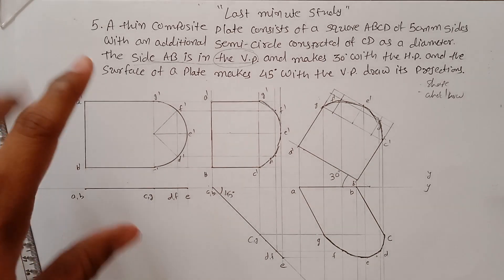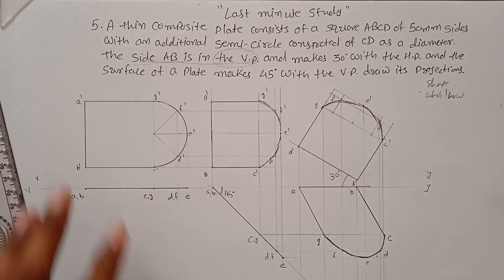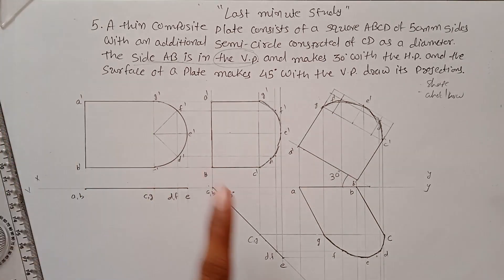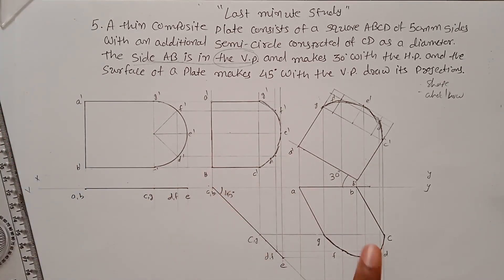This is problem number 5, showing the initial position, intermediate position, and final position at angles of 45 and 30 degrees.